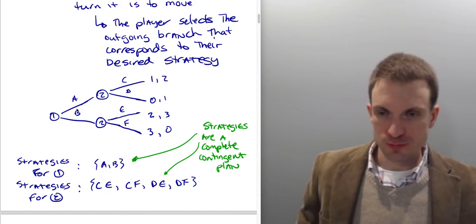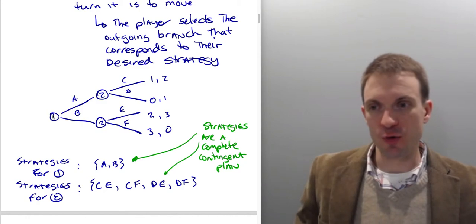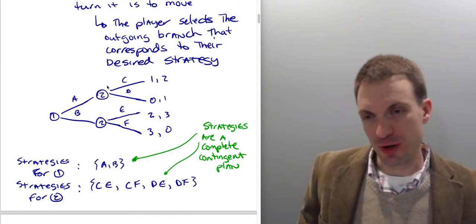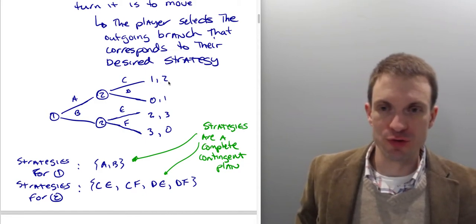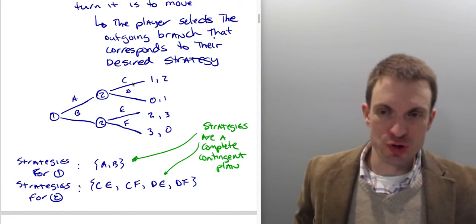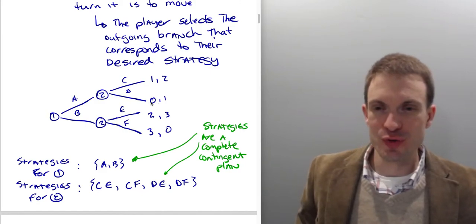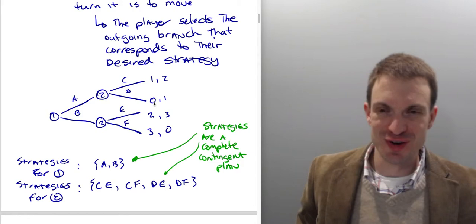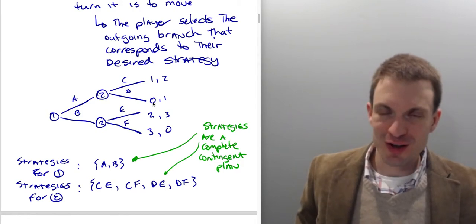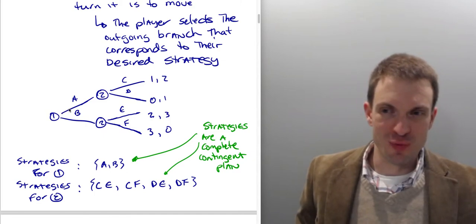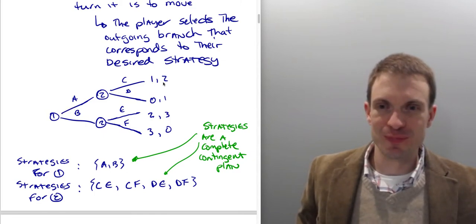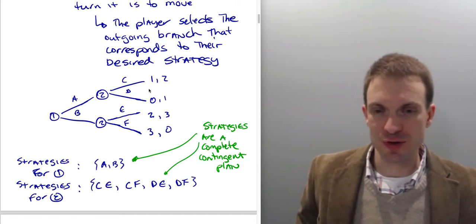So just for example, if player 1 were to select A, player 2 were to select C, player 1 would get a payoff of 1, player 2 would get a payoff of 2. If, however, player 2 would select D, player 2 would get a payoff of 1, and player 1 would get a payoff of 0. Player 2 probably not going to want to do that because they'd rather have this 2. So conditional on player 1 selecting A, player 2 would probably select C. And at least that's consistent with Nash Equilibrium.